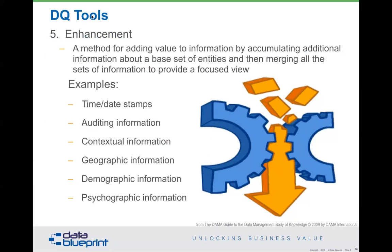The fifth category is data enhancement tools — pretty straightforward things we add to the original data, such as date and time stamps. If I know something occurred, it's more valuable to know when it occurred. We can also put in auditing information, contextual types of information, geographic codes. The new Apple credit card is using machine learning to put in geographic information for which Starbucks you bought your coffee from — Capital One has had that technology for years. Demographic and psychographic data can also be pulled in.